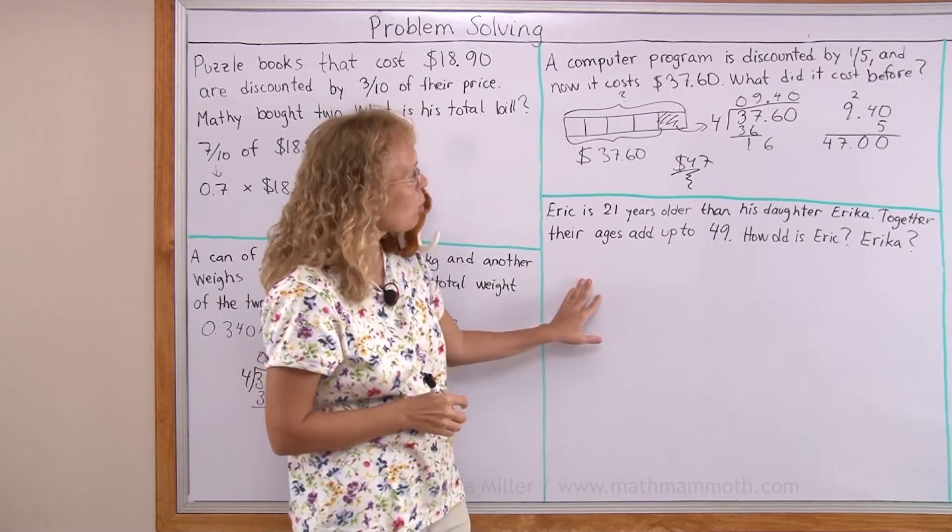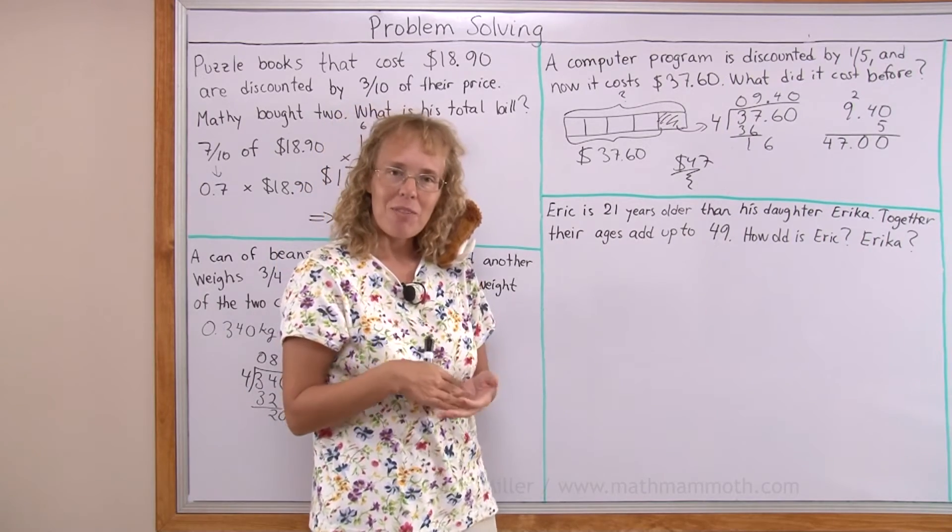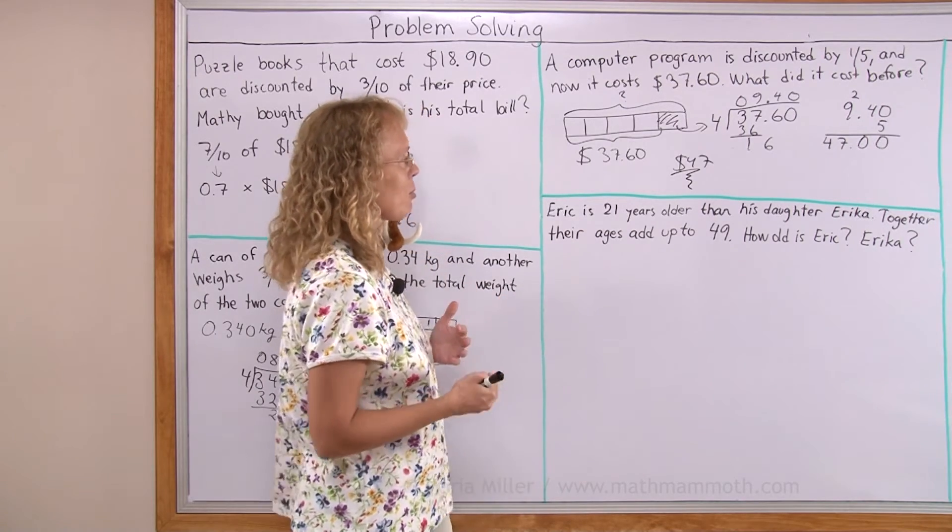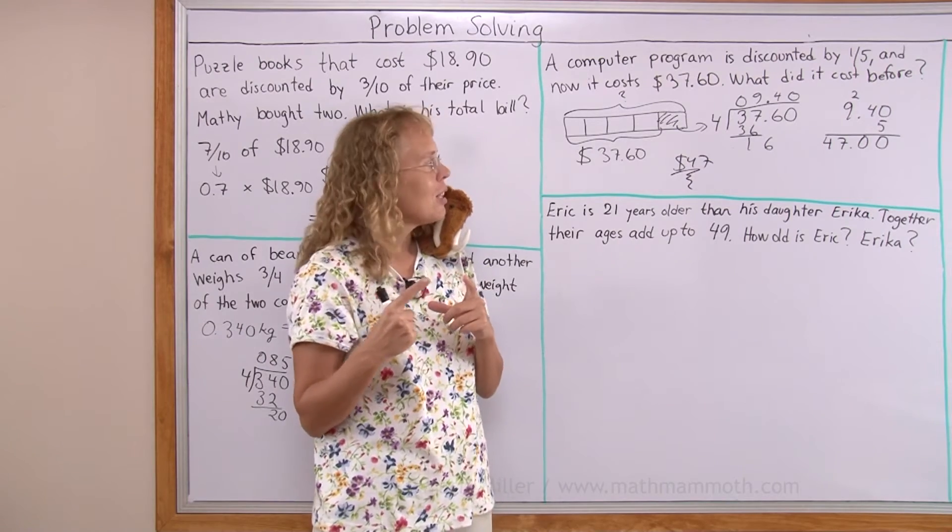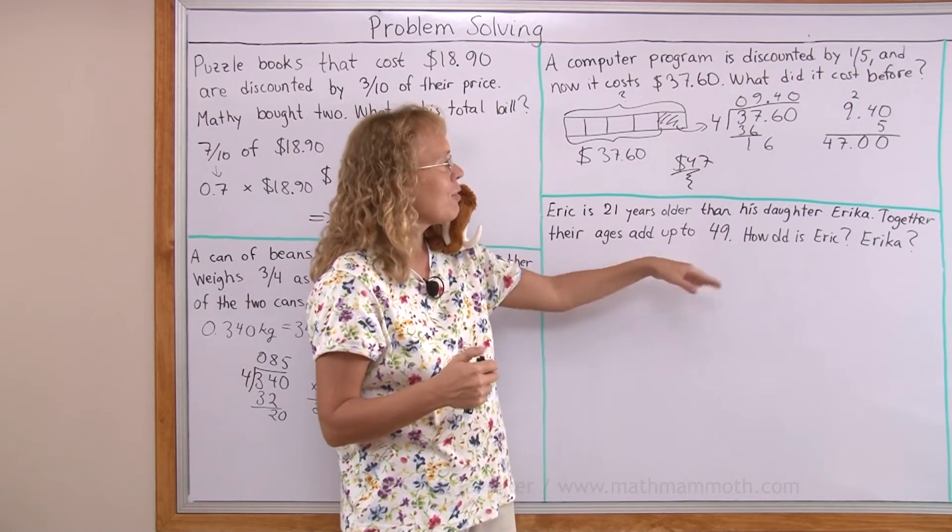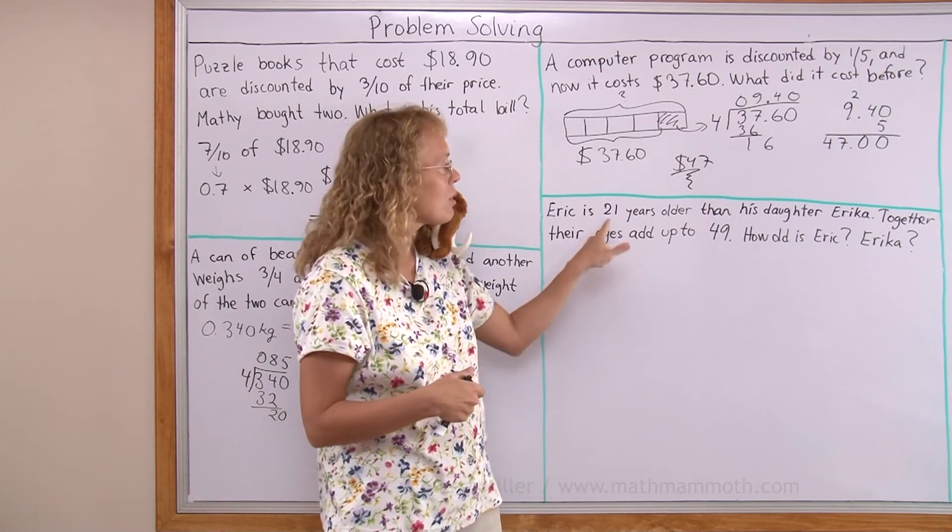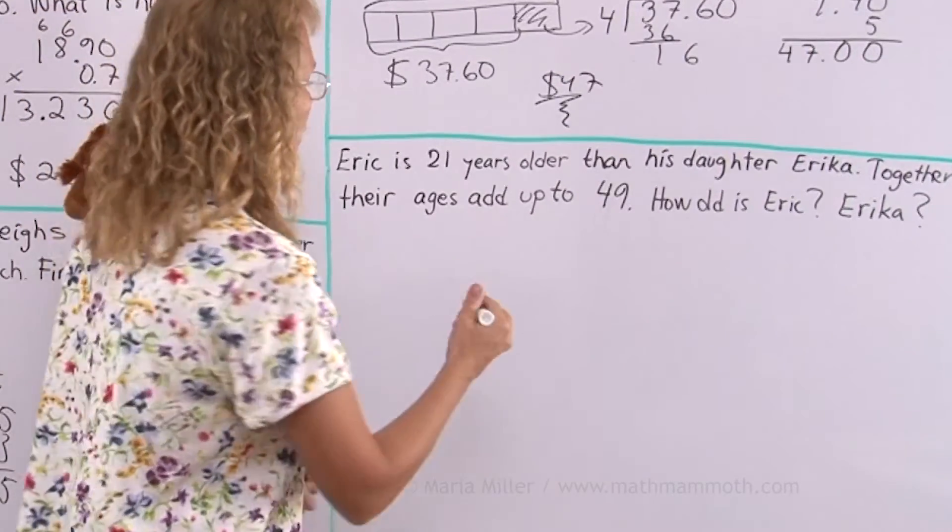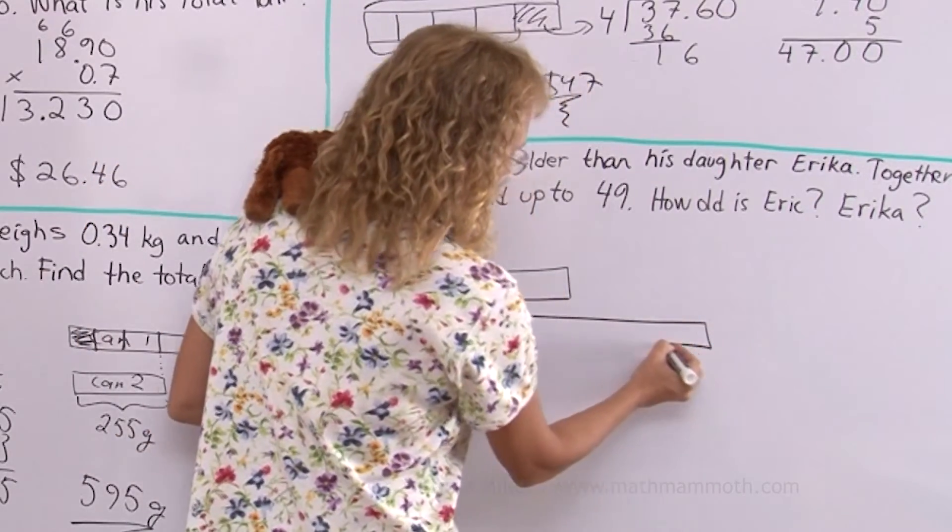Lastly, Eric is 21 years older than his daughter Erika. Together the ages add up to 49. In other words the sum of the ages is 49. How old is Eric and how old is Erika? This is a typical problem where we know the sum of two things and we know the difference between those two things or two amounts but we don't know the two amounts. There's two amounts and if you add them you're given that. If you subtract them you're also given that. Eric is 21 years older so that means that if you subtract those two ages you get 21. We know the difference we know the sum. We don't know these actual two numbers and I can again draw a bar diagram and solve it actually pretty quickly. This is a typical problem for algebra one courses but we don't need to use algebra we can use this diagram here.